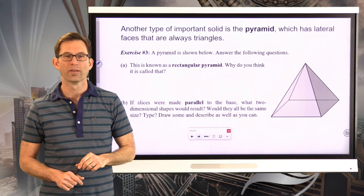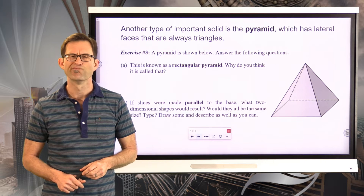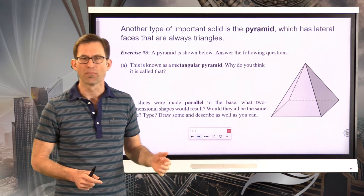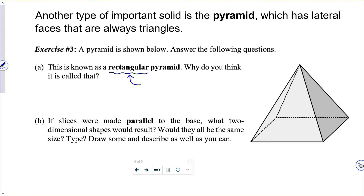Let's take a look at exercise number three. A pyramid is shown below. For letter A: this is known as a rectangular pyramid — why? The describing word tells you about the base. It's called a rectangular pyramid because its base is a rectangle. In a perspective drawing, the base may look like a parallelogram because of the viewing angle, but it is indeed a rectangle.